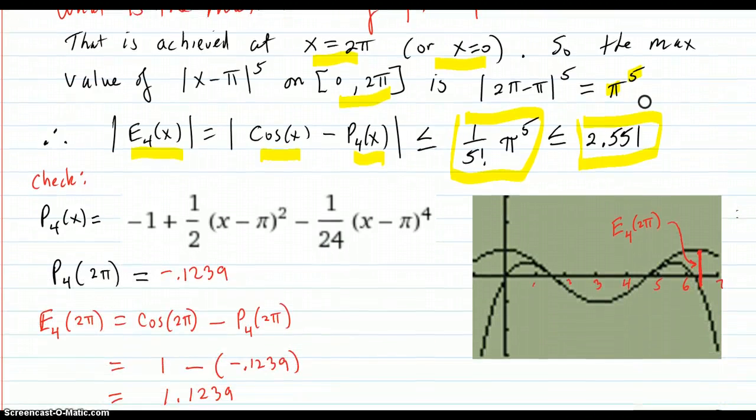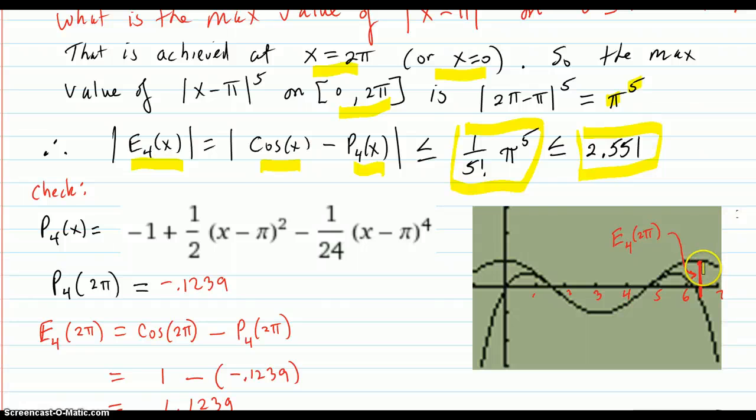When you look at the graph, there is a pretty big error between cosine, which is this one, and your P4, which is this polynomial of degree four. There's a big error here at π and at 2π. So that's looking good for our estimate upper bound for that error.